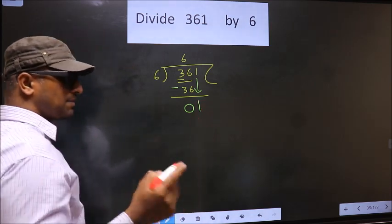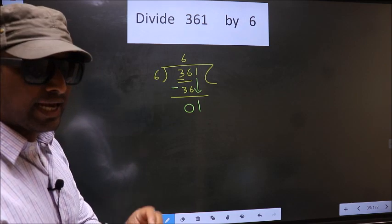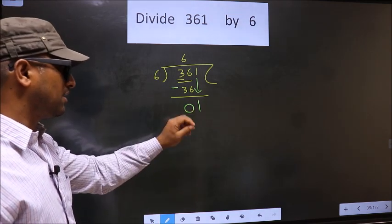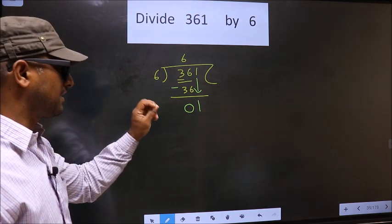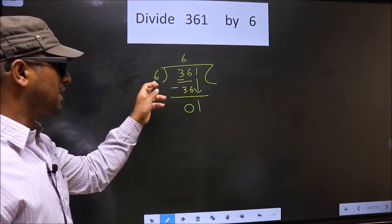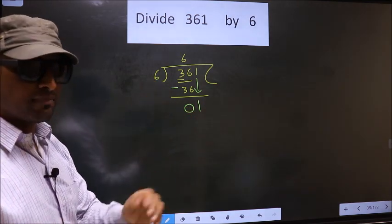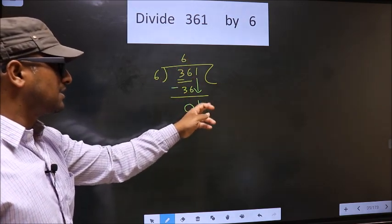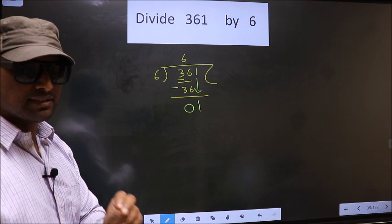This is where the mistake happens. And the mistake is this. Here we have 1. Here 6. 1 is smaller than 6. So what many do is they put a dot and take 0 here, which is wrong.